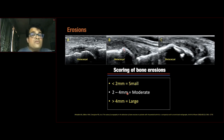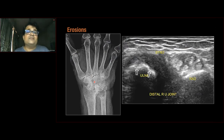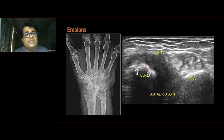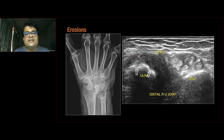Before scanning, always review the X-rays — they provide important information about the bone, preparing you for what to expect. In this patient's X-ray, there is almost complete lysis of the lower end of the ulna, large geodes, loss of joint space, and significant articular destruction. Correspondingly on ultrasound, large erosions are seen, dorsal subluxation of the ulna indicating wrist instability, and synovial hypertrophy — a fairly advanced case of rheumatoid arthritis. The X-ray and ultrasound findings complement each other.